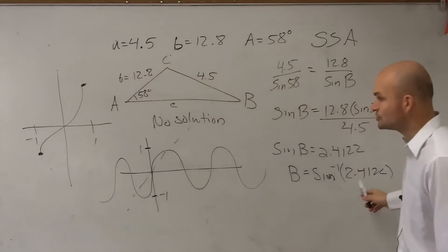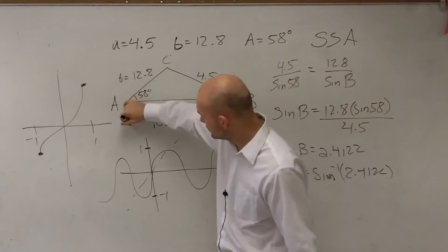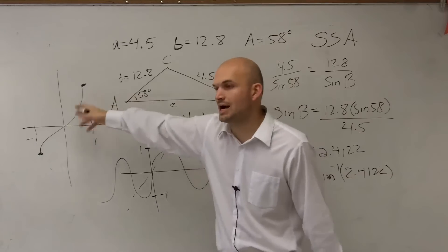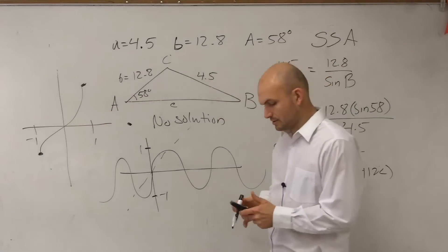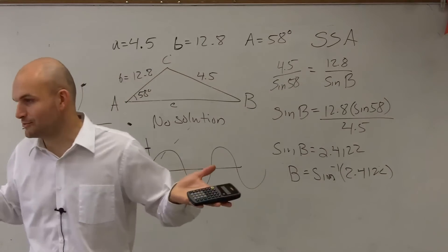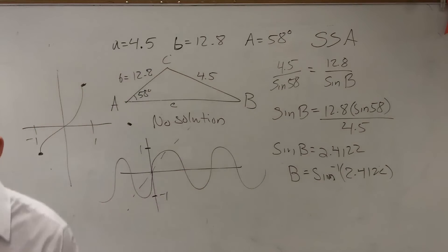This is 2.4. This is like over here. You can't evaluate for 2.4 on the inverse sine graph. So that's the mathematical understanding. You could also just go by, hey, the calculator won't let me do it, so no triangle can be formed.